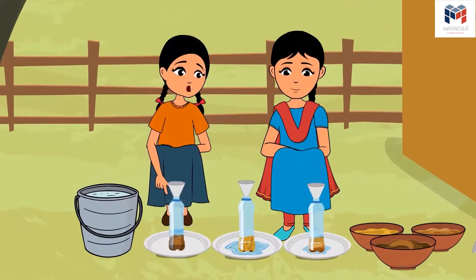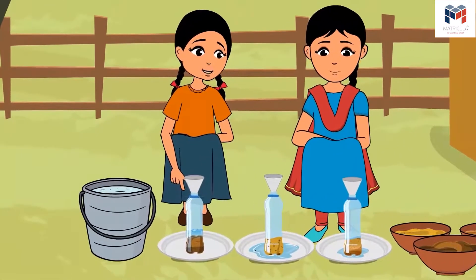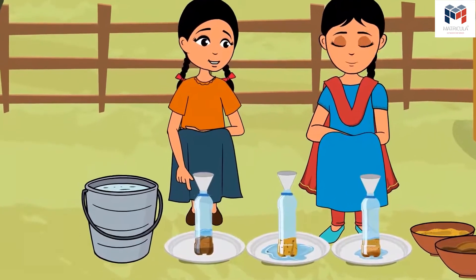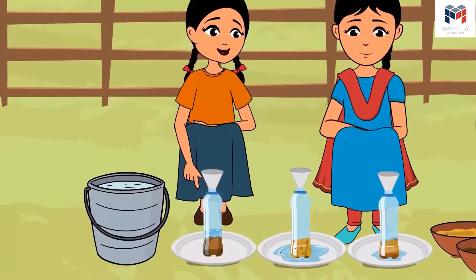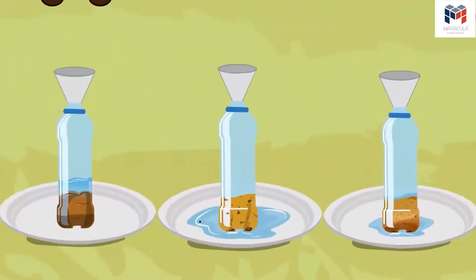'Nilu, look — the soil from Shankar Kaka's field let very little water pass through, and the sample from the garden allowed some water to pass while some is still there on top.'